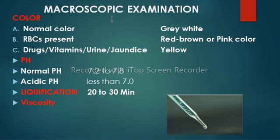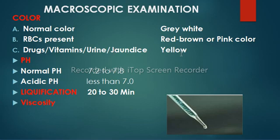Macroscopic or physical examination of semen includes color. The normal color of semen is gray-white. When the semen sample contains RBCs, the color appears red-brown or pink. The semen color also changes when a person uses drugs, vitamins, or in cases of jaundice or urine in semen, where the sample will appear yellow. The presence of gross macroscopic particles or debris should also be noted.